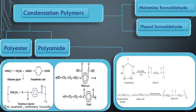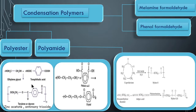Polyester: one example is Terylene or Dacron, which is made from ethylene glycol and terephthalic acid - this you have to remember. You need not remember the structure separately because you know what ethylene glycol is and you have read terephthalic acid in organic chemistry - their structures are already known to you.